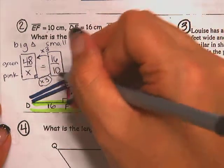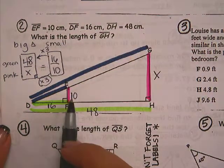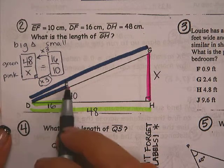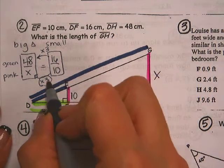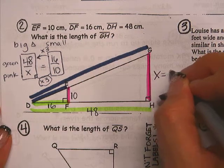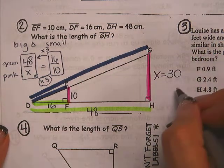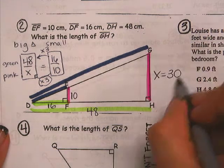Times 3 is my scale factor. Meaning each of these numbers have been multiplied by 3 to make this larger triangle. So 10 times 3 is 30. My missing side length is 30 centimeters.